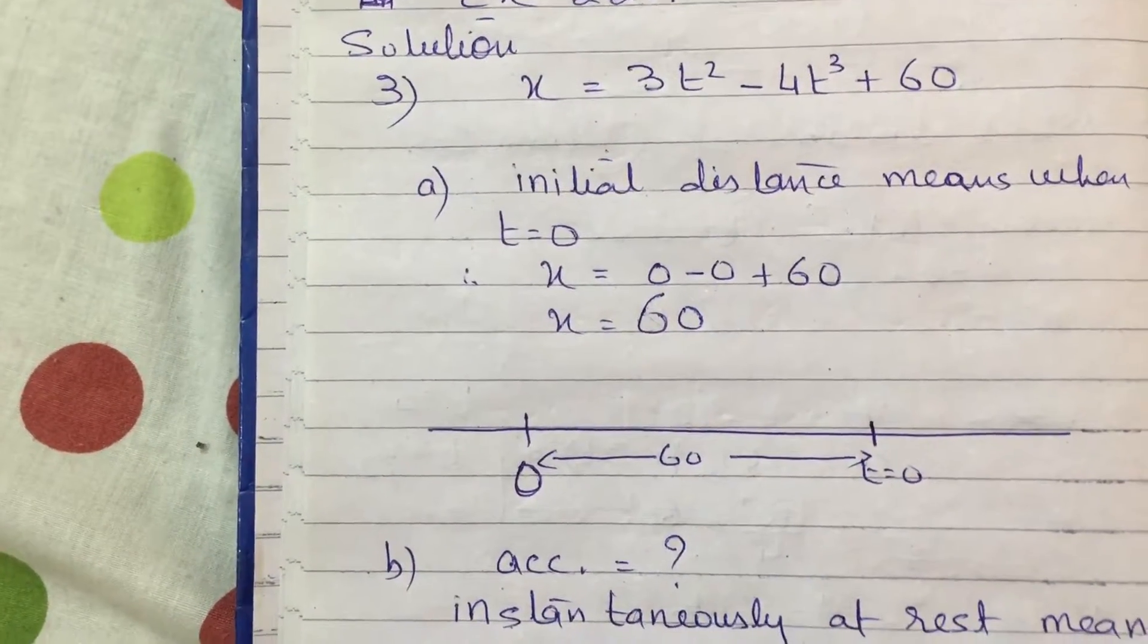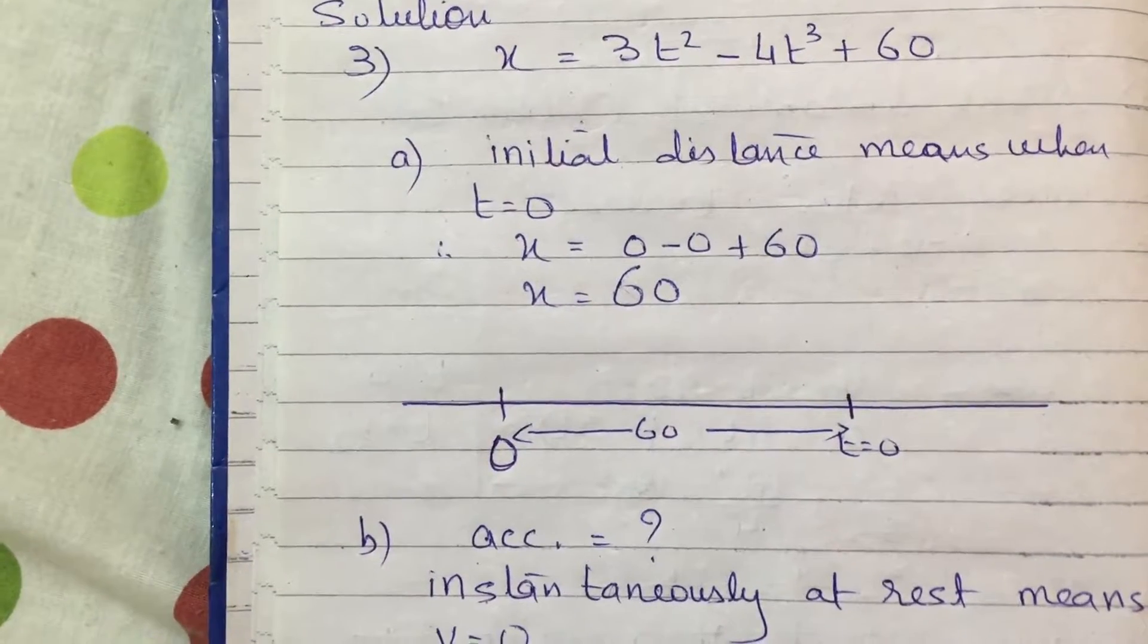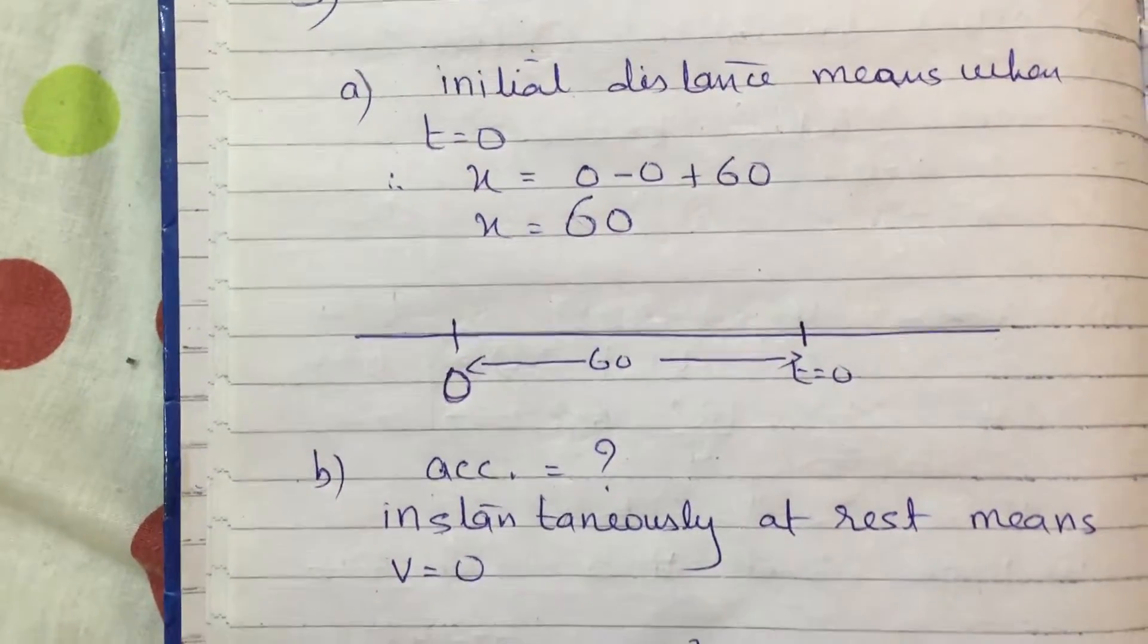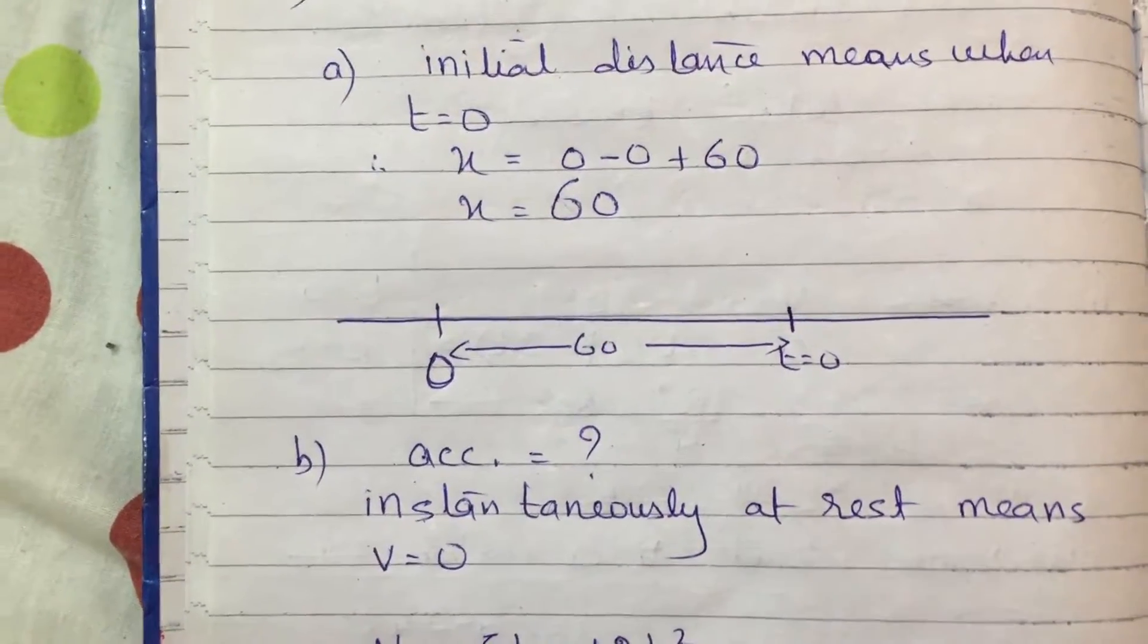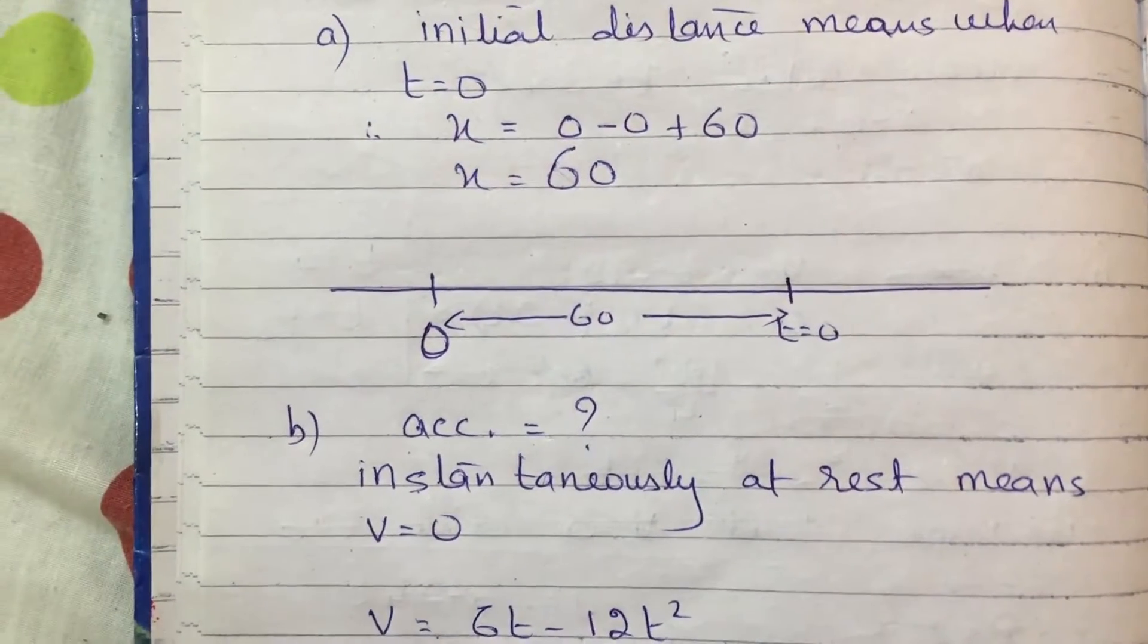The second part of the question is saying find out the acceleration magnitude when object was instantaneously at rest. Instantaneously at rest means v equals 0.